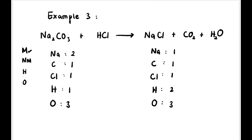Now balance using lb mnm ho. Metal first — we have Na: two on the left, one on the right, so we place coefficient 2 in front of NaCl on the right; automatically Cl also becomes two on the right. Non-metal next: carbon — one and one, already balanced. Then chlorine — two on the right, so we place coefficient 2 in front of HCl on the left; automatically H also becomes two on the left. Now H: two on the left, two on the right — balanced. Oxygen: three on the left, three on the right — balanced.